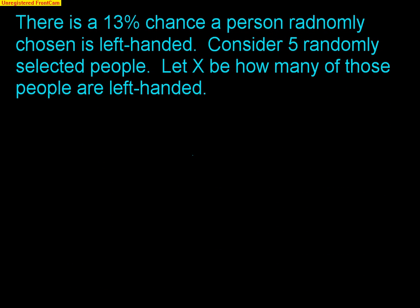Here's the problem. There's a 13% chance a person randomly chosen is left-handed. Consider five randomly selected people. Let X be how many of those people are left-handed. First, let's make sure that we understand that this is a binomial situation by checking our BINS — B-I-N-S.